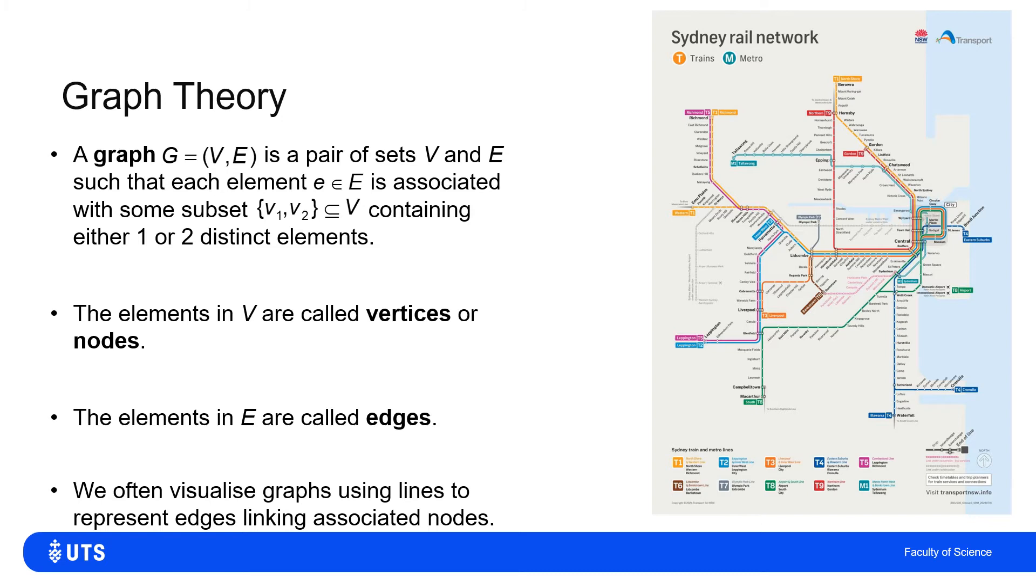And the rail line between two nodes that you could travel to directly as being edges. So this mathematically is a graph.